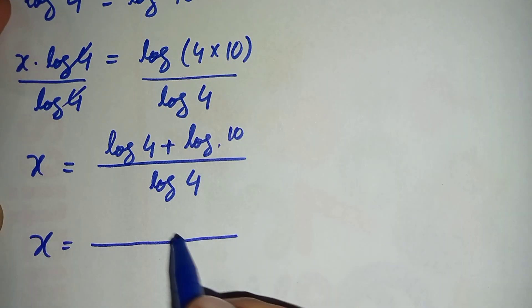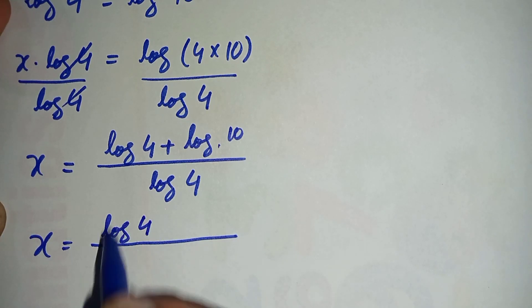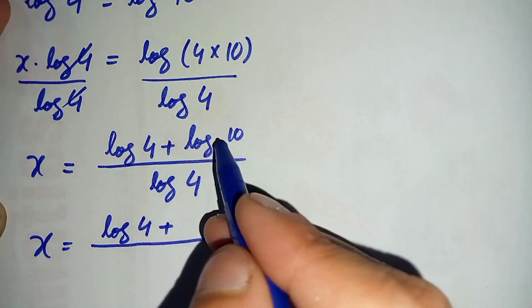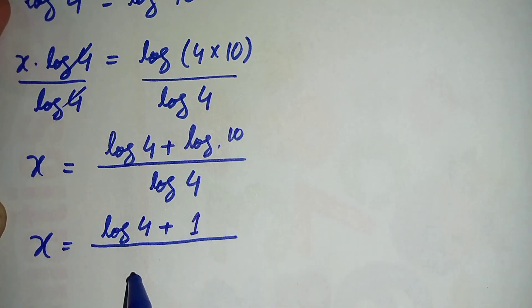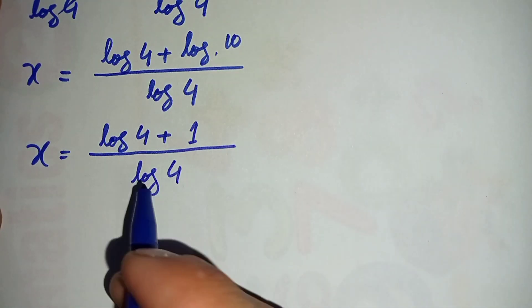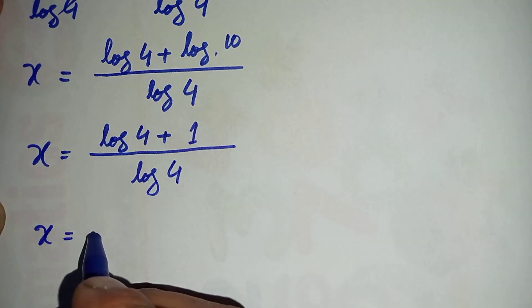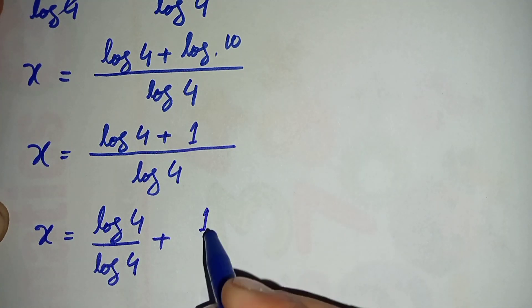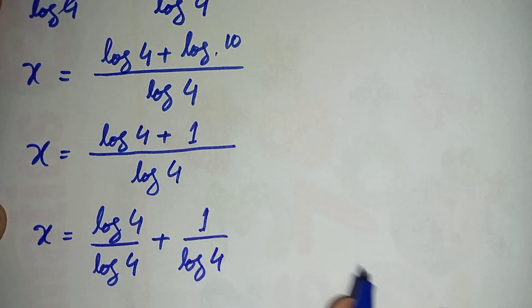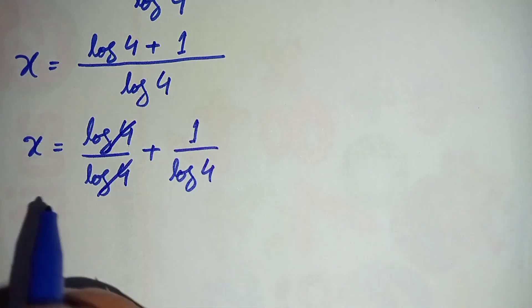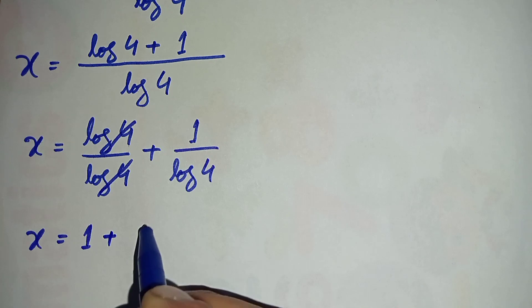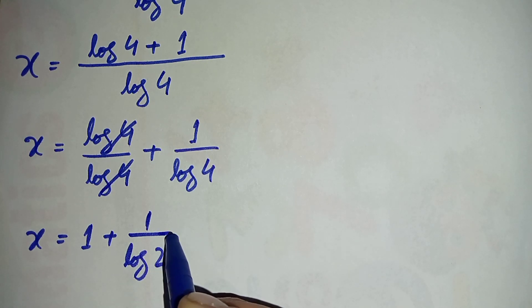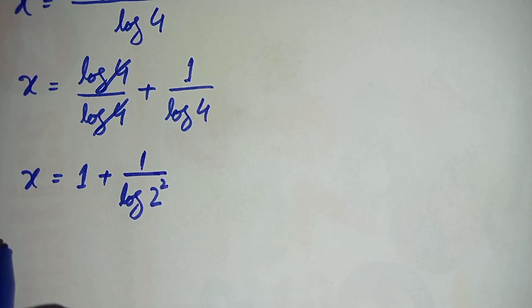So x equals log of 4 plus log of 10, divided by log of 4. Since the base is 10, log of 10 equals 1. We can split this as log 4 over log 4 plus 1 over log 4. The first term simplifies to 1, giving x equals 1 plus 1 over log 4. We can rewrite log 4 as log of 2 squared, which becomes 2 times log of 2.